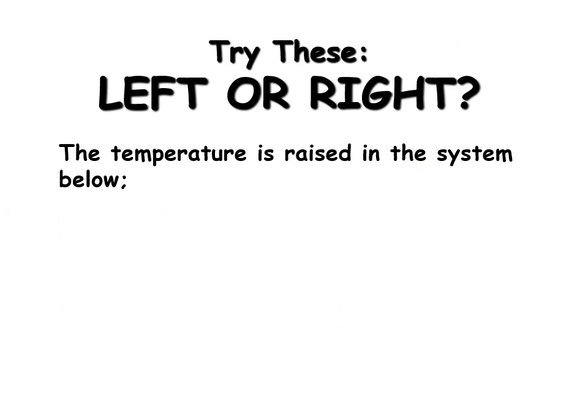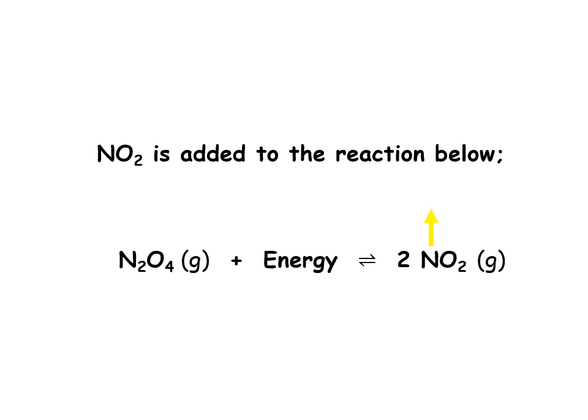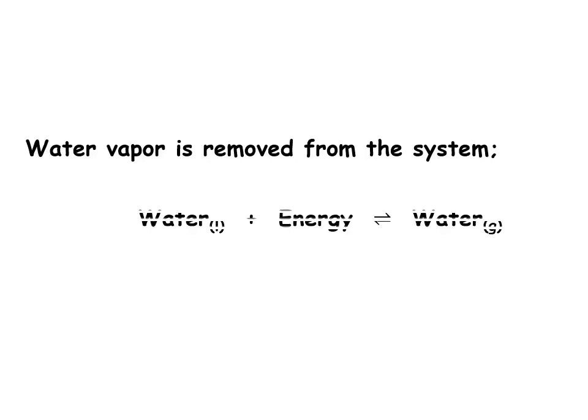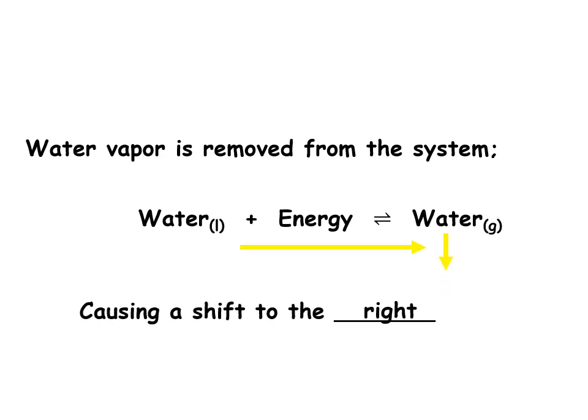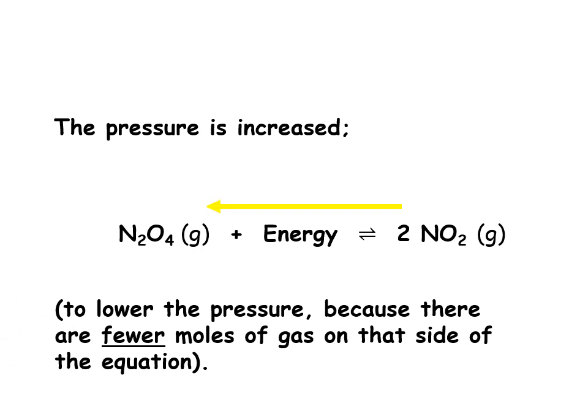Practice examples — shift left or right? First: temperature is raised for the system ice + energy ⇌ water. Since it's endothermic, adding energy shifts it to the right — ice melts. Second: NO₂ is added as a product to its reaction, so we see a shift to the left. K stays the same since temperature isn't changed. Third: water vapor is removed as a product, so we shift right to replace it. Fourth: pressure increases on a reaction with one reactant particle and two product particles — it shifts left, toward fewer gas molecules.